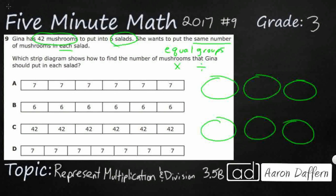I've got 42 mushrooms, and I need to make sure I put the same number in each. If I don't know a multiplication or division fact that has 42 and 6, I can just put one in each and make it even until I run out. Counting up: 1 through 12 — that's 6 times 2, or 2 times 6 equals 12.